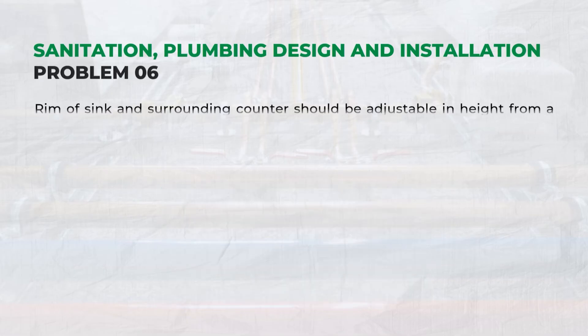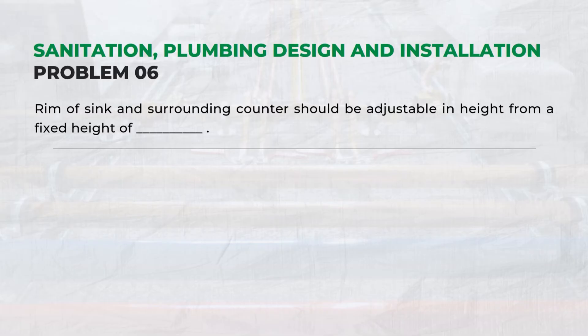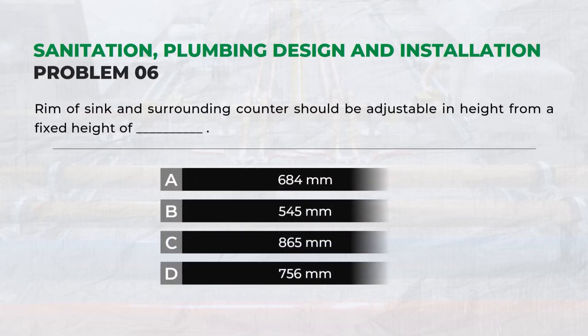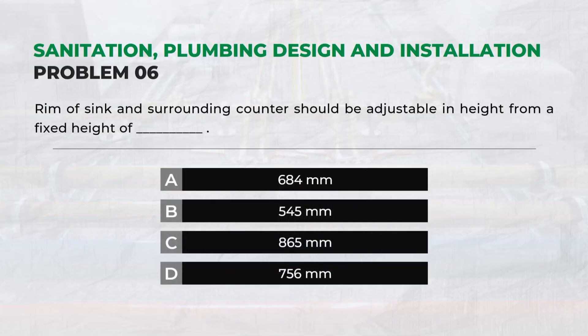The rim of a sink and surrounding counter should be adjustable in height from a fixed height of — Answer: C. 865 mm.